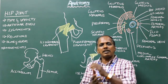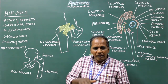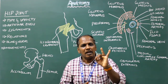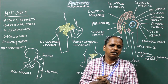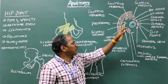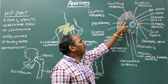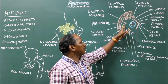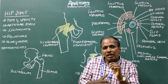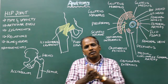Abduction is by gluteus medius and gluteus minimus, supported by tensor fasciae latae. Medial rotation is by the tendon of iliopsoas, pectineus, adductor magnus, and adductor brevis. Lateral rotation is by the short muscles: piriformis, superior gemellus, inferior gemellus, obturator internus, and quadratus femoris. Circumduction is a combined movement of flexion, extension, adduction, and abduction, so the muscles responsible for those movements produce circumduction.